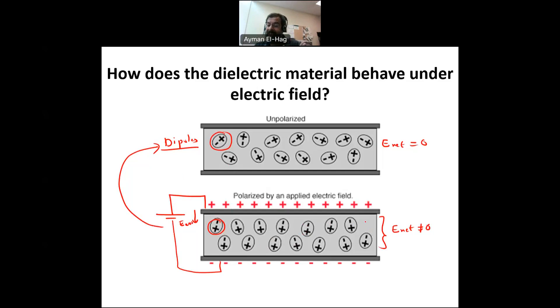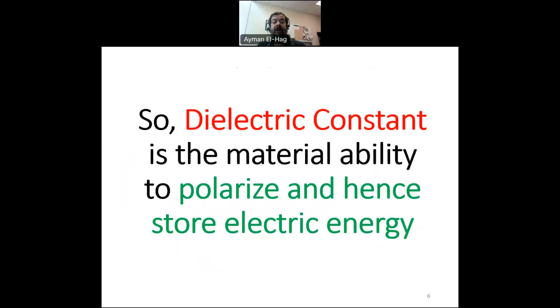So, if we have less polarization, then the net electric field inside the material will be less. If you have more polarization, then the net electric field will be more. So, in conclusion, the dielectric constant, epsilon r, is basically is the material ability to polarize when we apply an external field and hence to store electric energy.